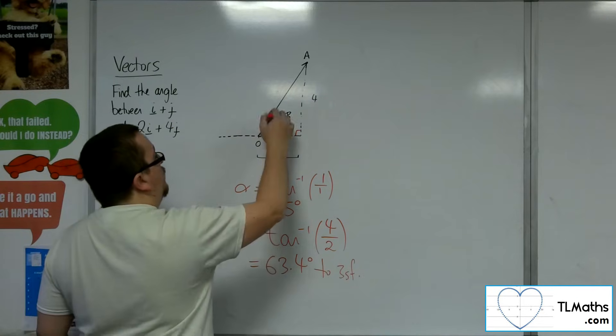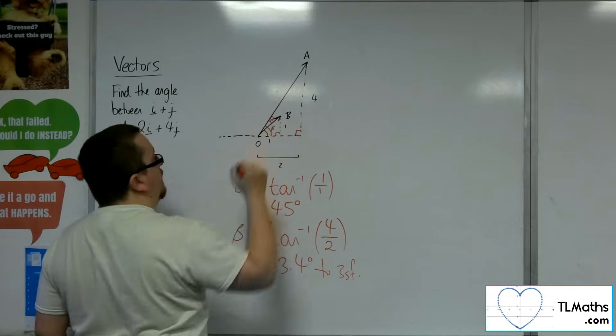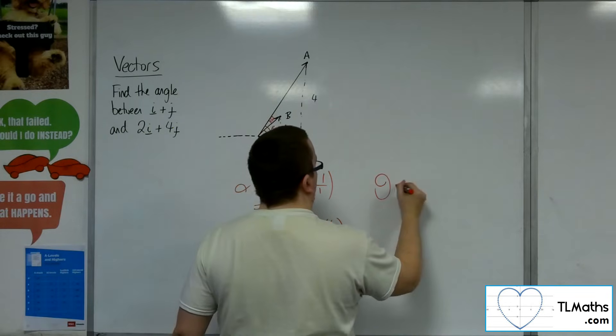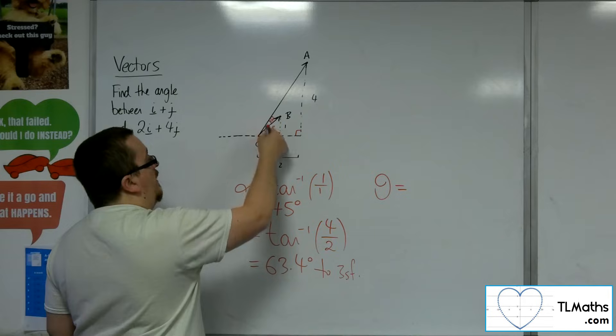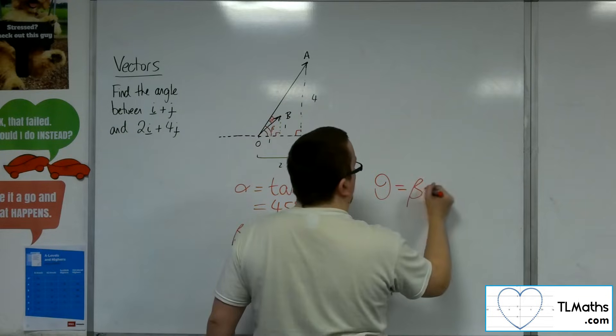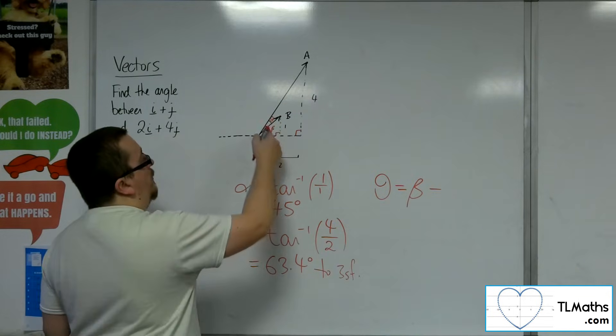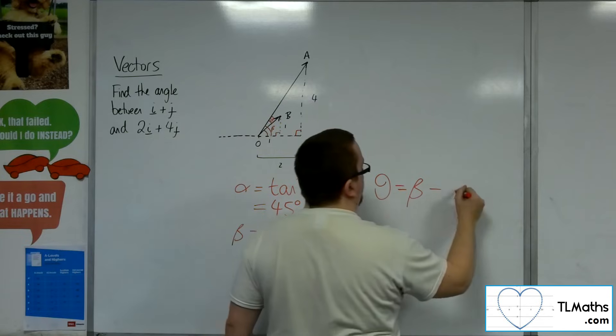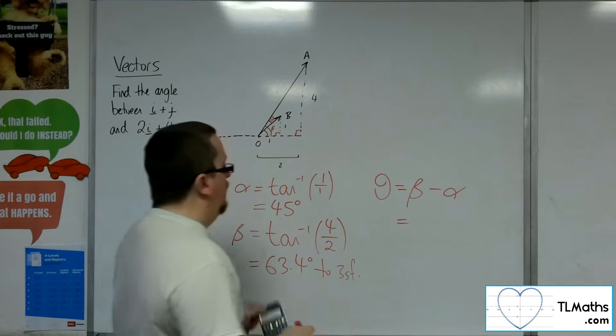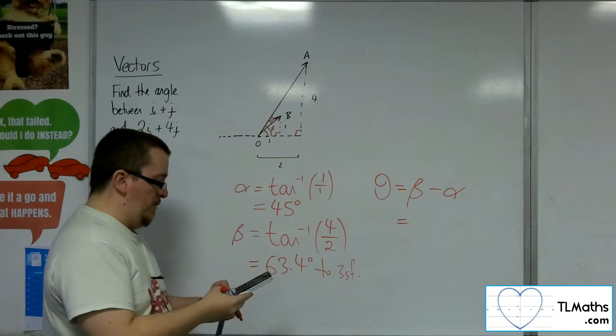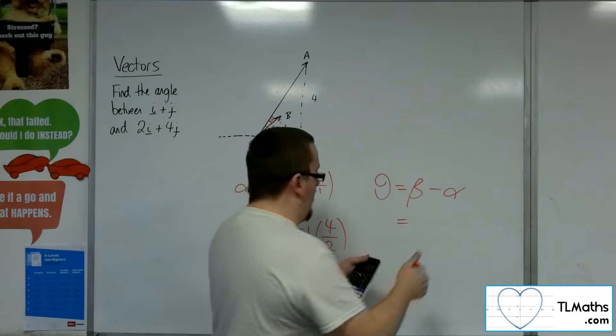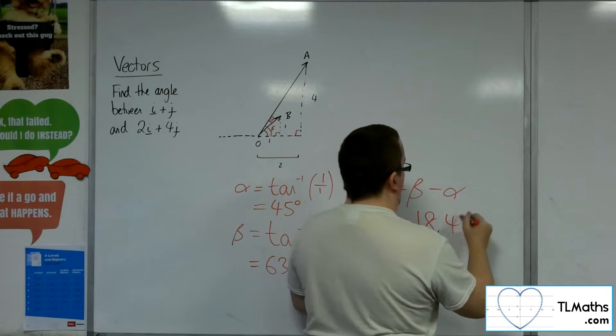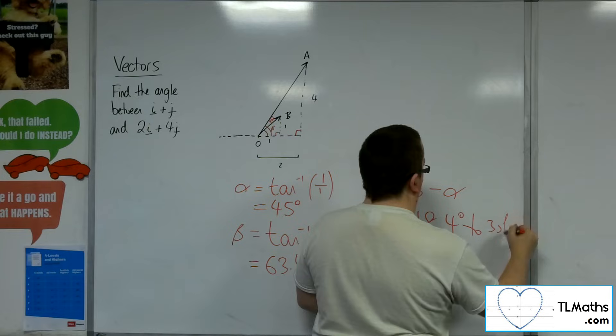So the angle that we want, this theta, is equal to the larger angle, beta, take away the smaller angle, alpha. So 63.4, take away 45, and we get 18.4 degrees to 3 sig fig.